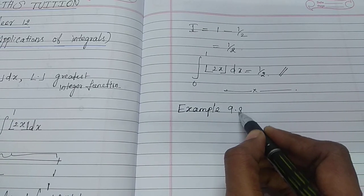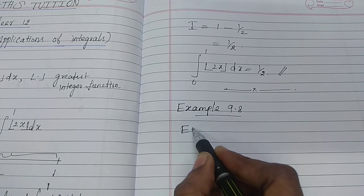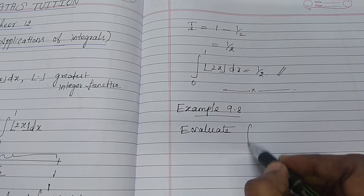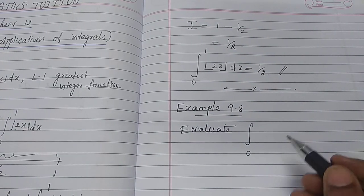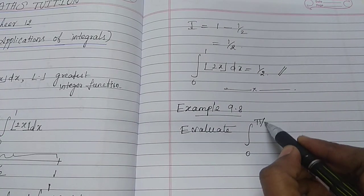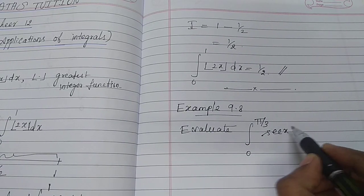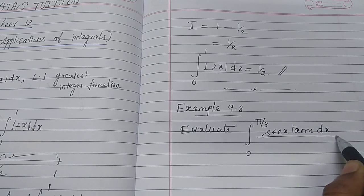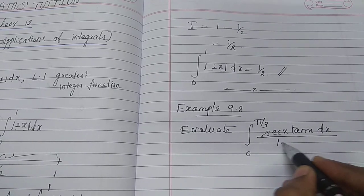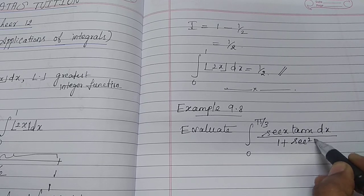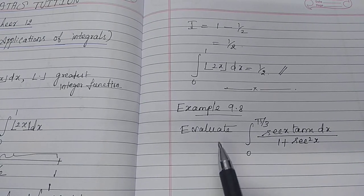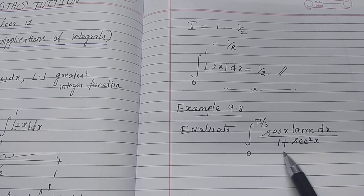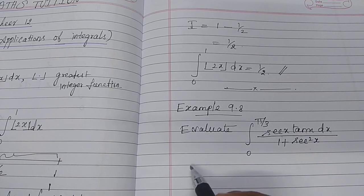Example 9.8. The question is: Evaluate the integral from 0 to π/3 of sec x tan x dx divided by (1 + sec²x). Solution.